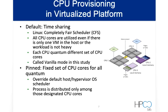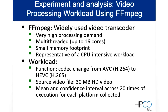Our first experiment is about video processing workload using FFmpeg, which is widely used for video transcoding. It is very high in processing demand, multi-threaded up to 16 cores, has a very small memory footprint, and is representative of a CPU-intensive workload. Our workload runs a codec change from H.264 to H.265 on a 30 megabyte HD source video file. Mean and confidence interval across 20 executions for each platform are collected.